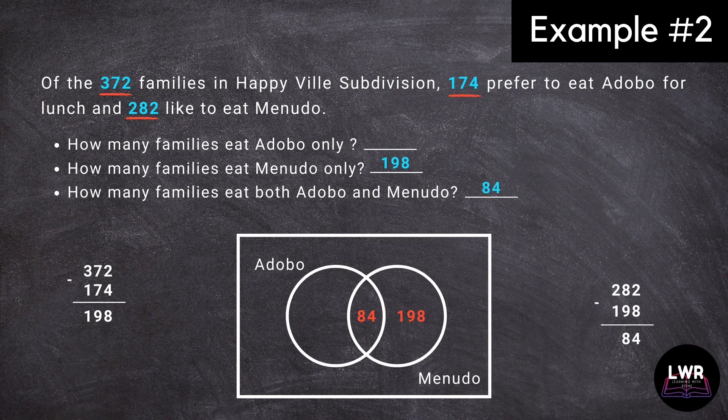To get the other data for adobo, we will have 174 minus 84, that resulted in 90, which is the answer for the number of families that eat adobo only.